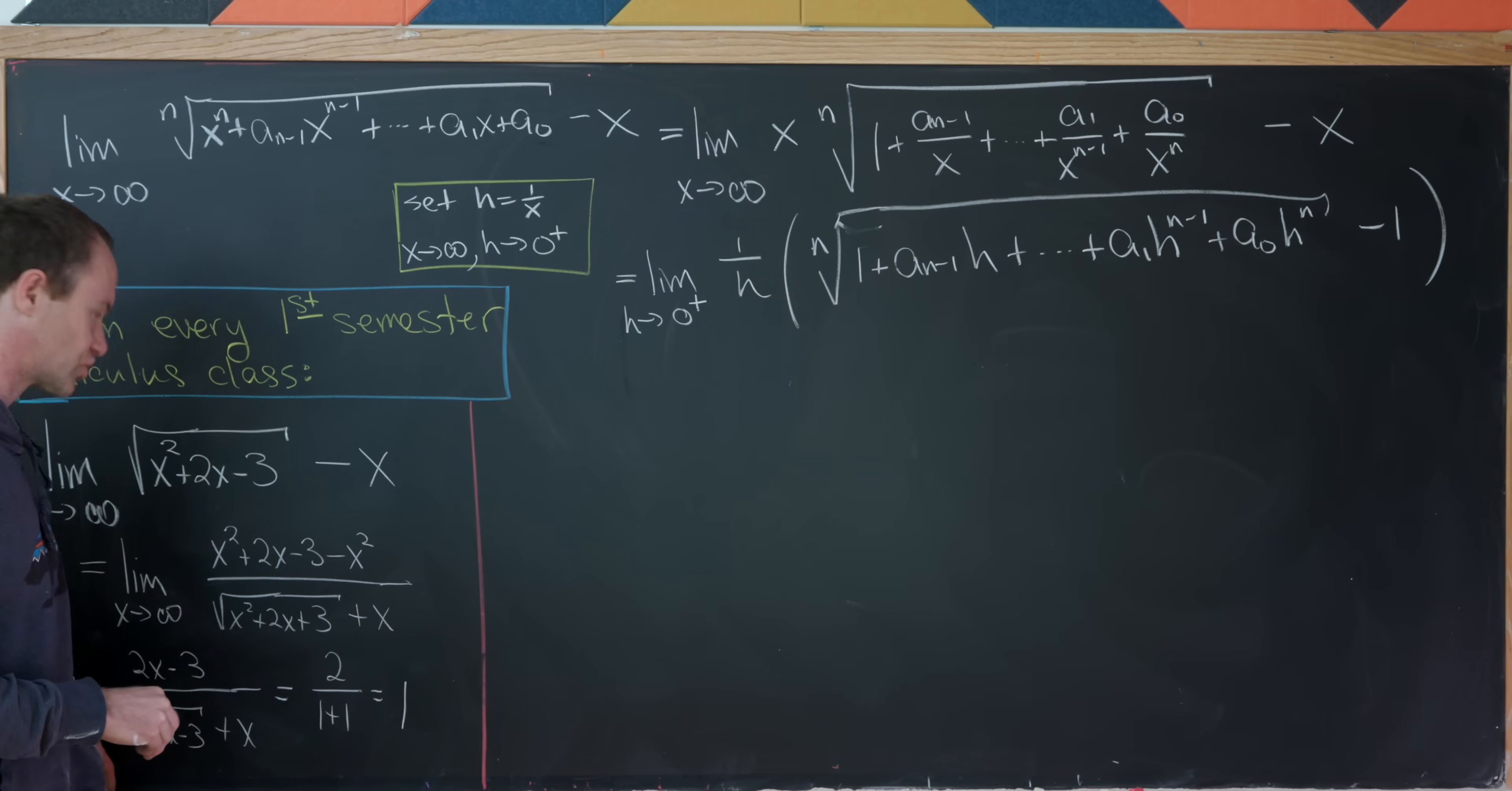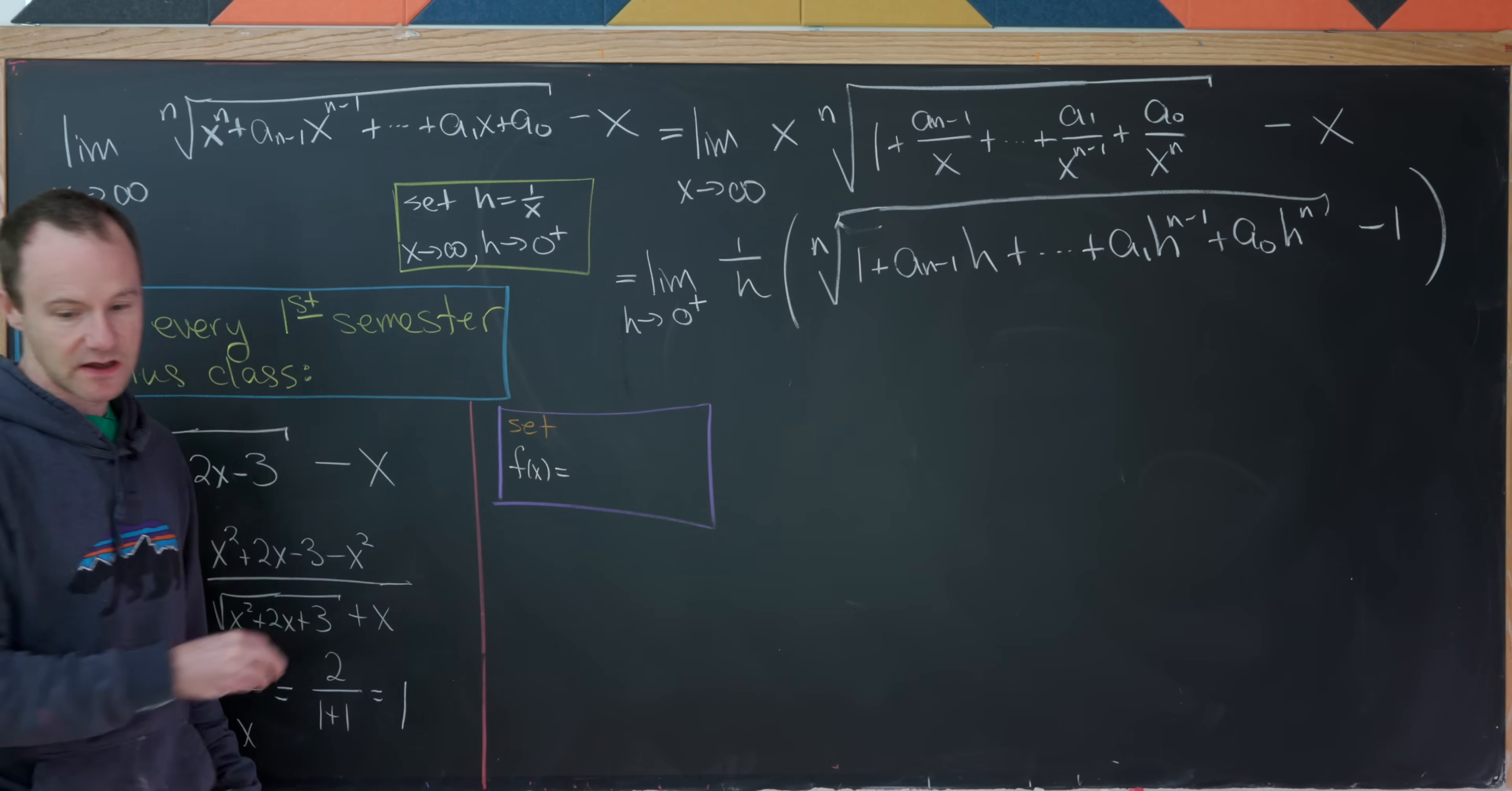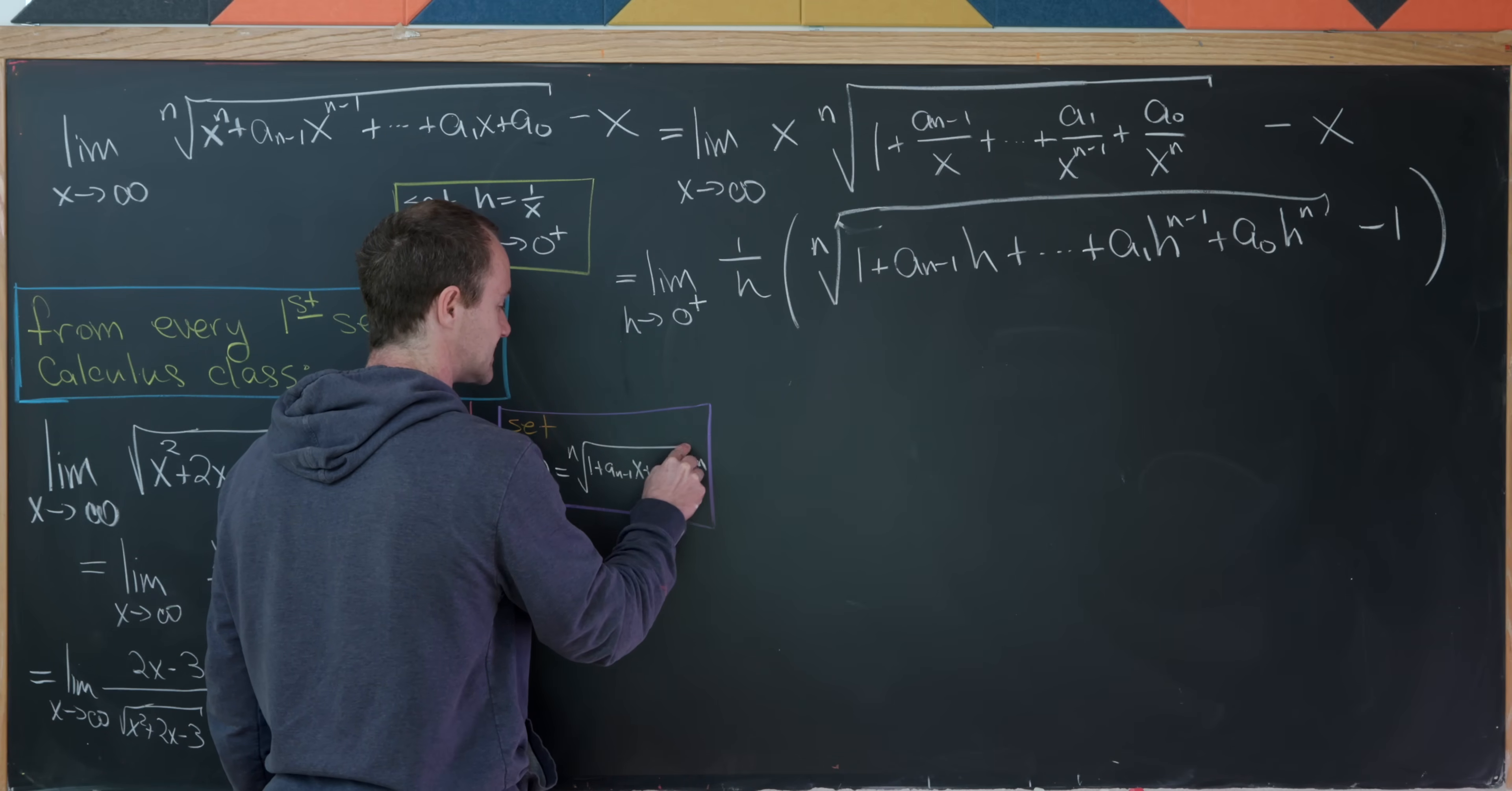And now here's where the trick comes in, and I really like this trick. Let's introduce a new function into this setup. So I'm going to set f of x equal to the nth root of essentially this thing where we've got x's instead of h's. So 1 plus a sub n minus 1 times x all the way down to a0 times x to the n.